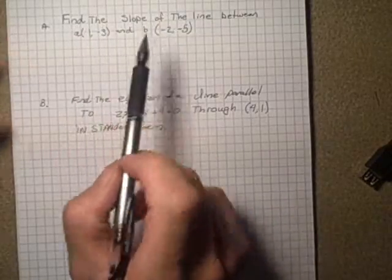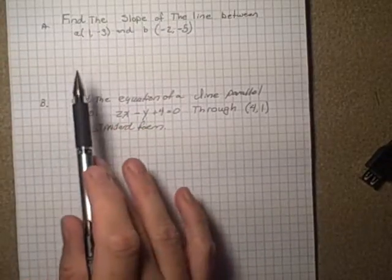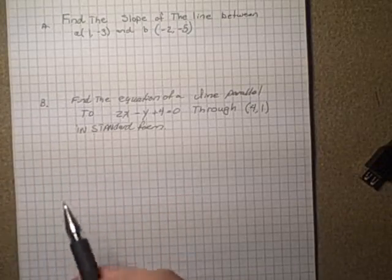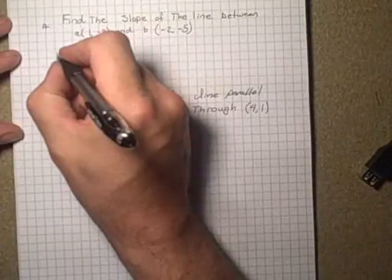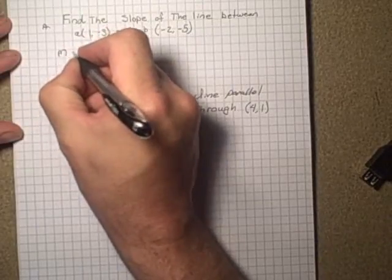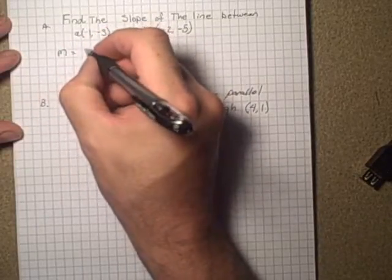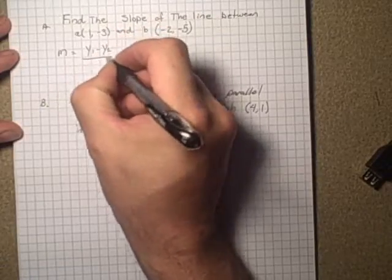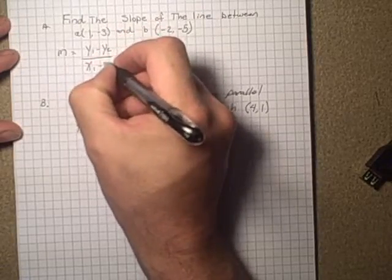So find the slope of the line between point A, which is (1, -3), and point B, (-2, -5). We could use the slope formula, which is y1 minus y2 over x1 minus x2.